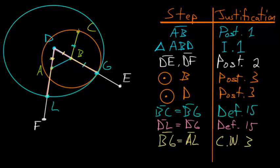We've already shown that this line BC is equal to the line BG. And since BG is equal to AL, we can use Common Notion number 1, that states that things which are equal to the same thing are also equal to each other. So AL here has to be equal to BC.